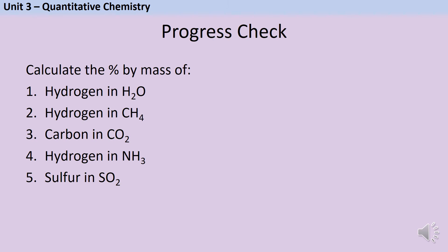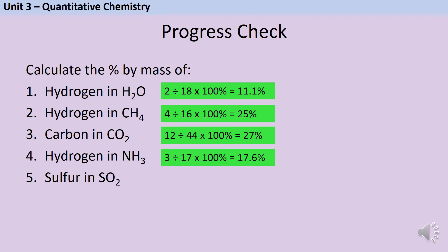So hopefully you worked out that the percentage by mass of hydrogen in water, H2O, is 11.1 percent. We do two because there are two hydrogen atoms divided by 18 which is the relative formula mass of water. Then hydrogen in methane, CH4, makes up 25 percent. Carbon in carbon dioxide, CO2, makes up 27 percent. Hydrogen in ammonia, NH3, makes up 17.6 percent, and sulfur in sulfur dioxide, SO2, makes up 50 percent.